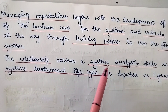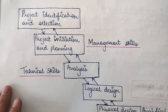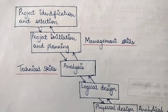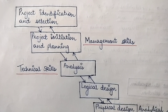The relationship between a system analyst's skills and the system development lifecycle is depicted in a figure. This is the last skill — interpersonal skill — we are studying. There are four skills required as qualifications of any system analyst: analytical skills, technical skills, management skills, and interpersonal skills. At each stage of the system development lifecycle, one of these skills will be used, which is why they are all considered qualifications of the system analyst.